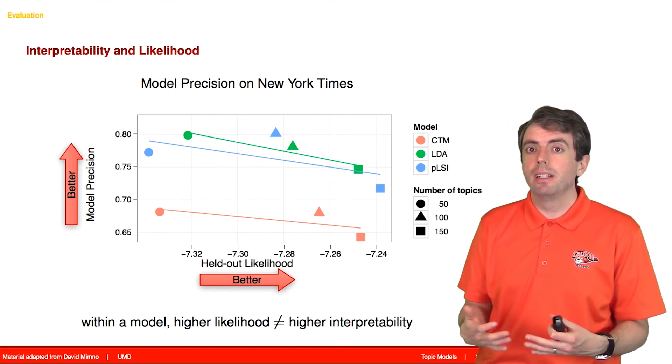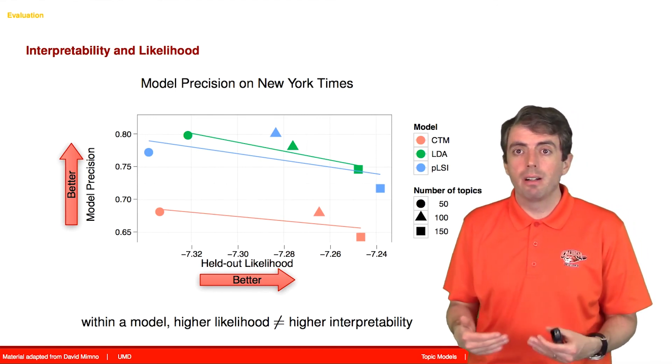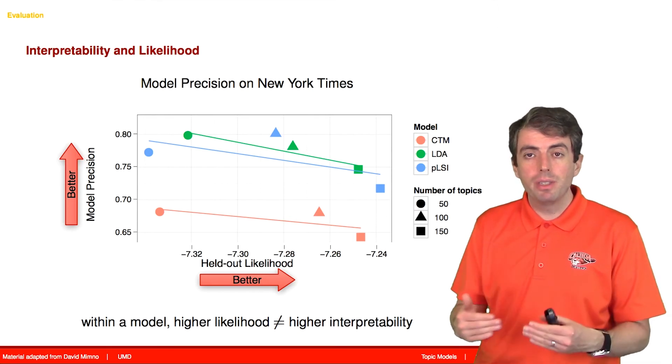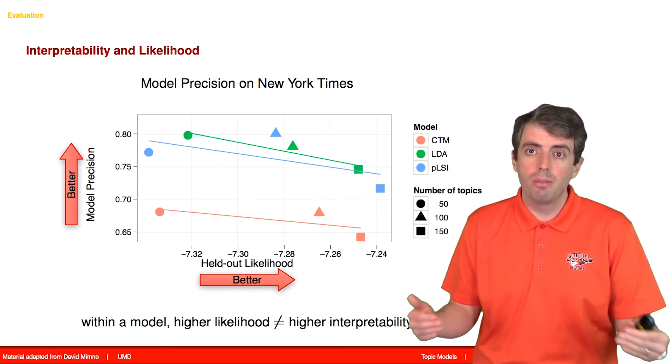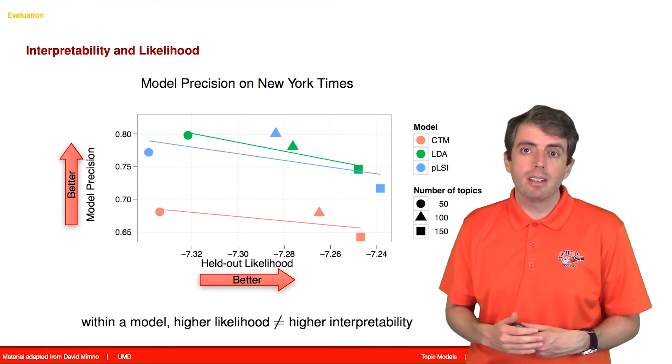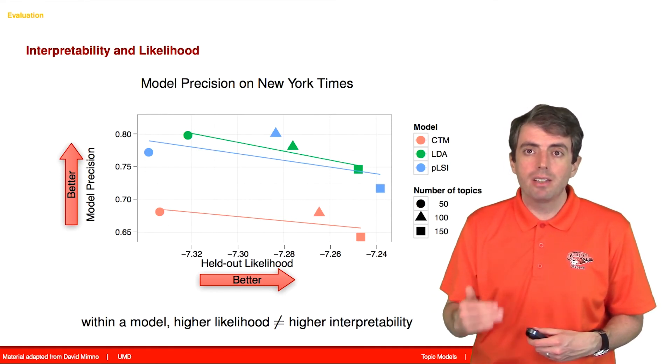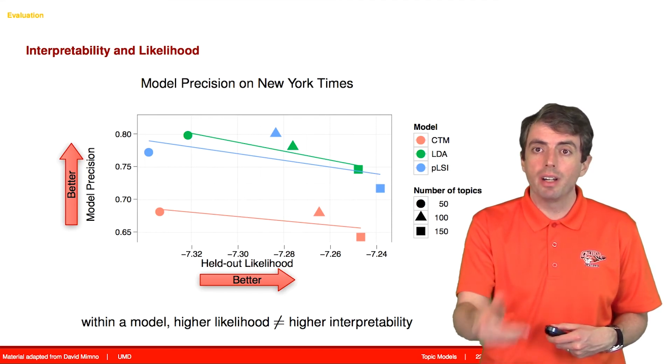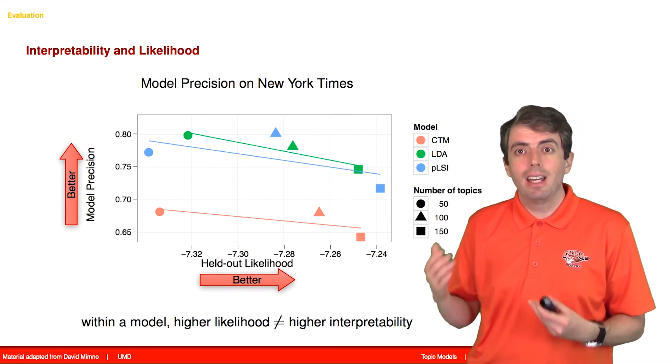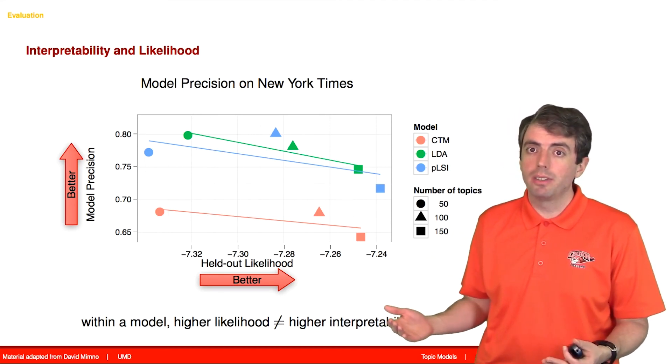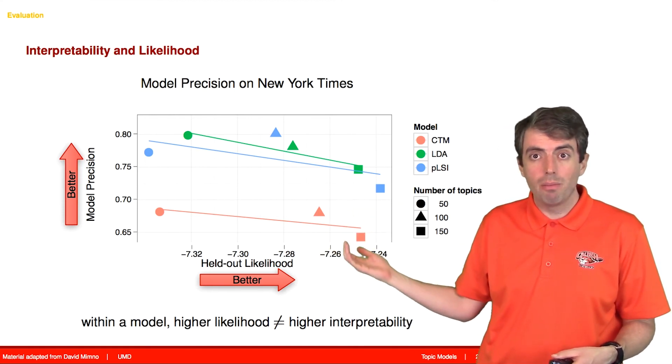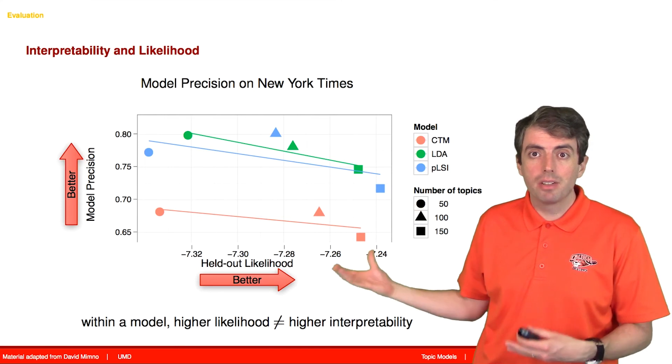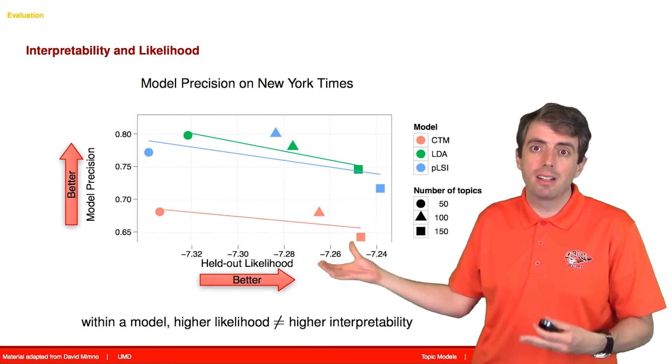So the moral of the story is that you should measure what you care about. And if you're using a topic model, oftentimes you're using the topic model to tell a story to a human. And if that's what you're using a topic model for, you should make sure that you're actually measuring whether it makes sense to a human or not. And if you're doing that, you shouldn't measure something like held-out likelihood, which only measures the complexity of the model, and measures something that topic models aren't actually used for.